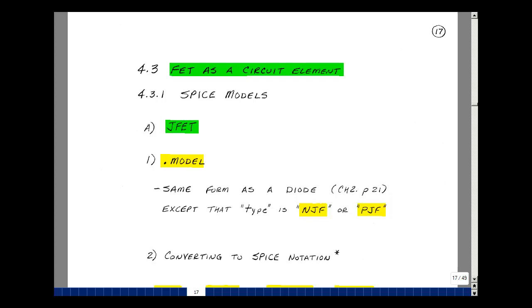This lesson deals with SPICE models for JFETs and MOSFETs. You can find these notes in the ECE 302 ebook in chapter 4, starting on page 17. Let's first look at the JFET SPICE model. As we did with diodes and BJTs, the modeling is done on the dot model line. And this time, for type, we'll use NJF for an N-channel JFET and PJF for a P-channel JFET.